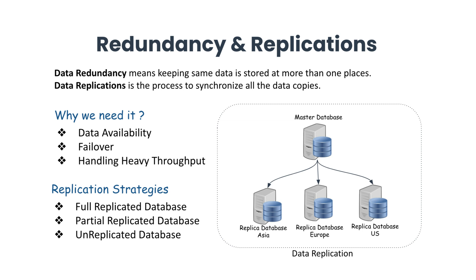Let's talk one by one. Data availability: if we have a single copy of a file stored on one server, in case of server failure we would lose the data, so it is better to keep more than one copy of the data file. Failover: in case of server failure we can fall back on the replica server. Handling heavy throughput: when a single server gets throughput more than its capacity, we can create multiple replicas of the data and throughput can be served with low latency.